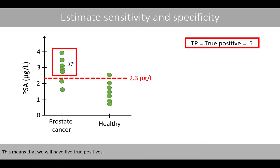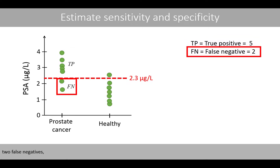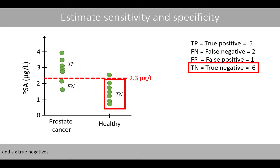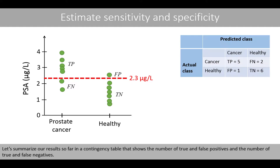This means that we will have five true positives, two false negatives, one false positive, and six true negatives. Let's summarize our results in a contingency table that shows the number of true and false positives and the number of true and false negatives.